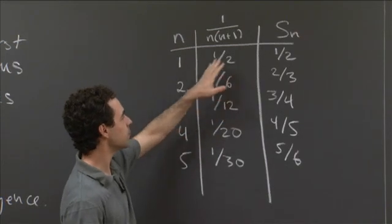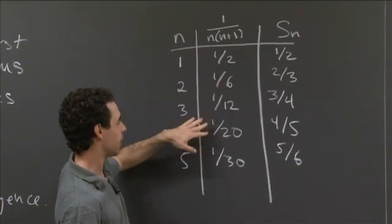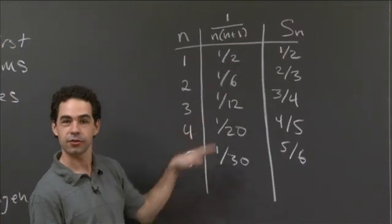When n is 2, it's 1 over 2 times 3, which is a sixth. So we've got a 12th, a 20th, a 30th, and so on. So those are the things we're adding up.